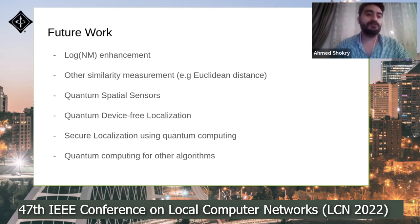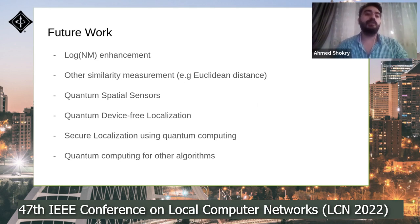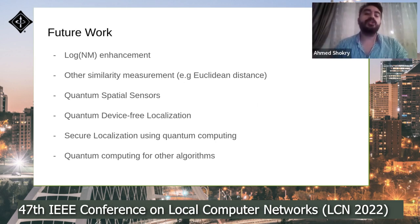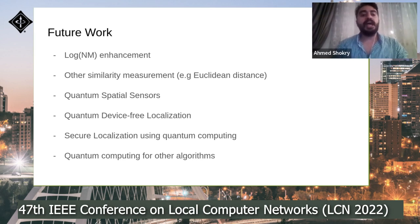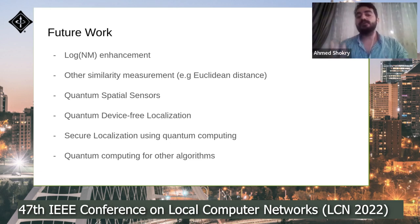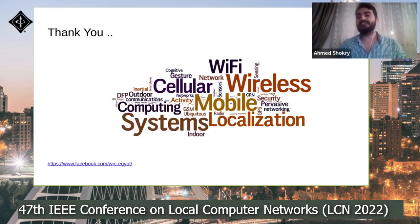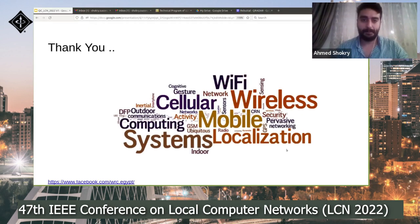Our future work includes enhancing the complexity of our quantum algorithm to O(log(nm)), exploring different similarity measures such as Euclidean distance instead of cosine similarity, using different quantum spatial sensors, quantum device-free localization, securing localization systems using quantum computing, and applying quantum computing for other location determination algorithms.